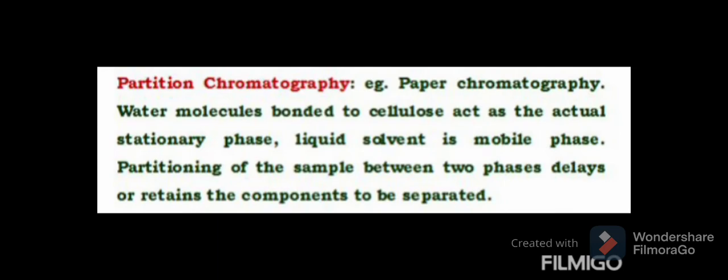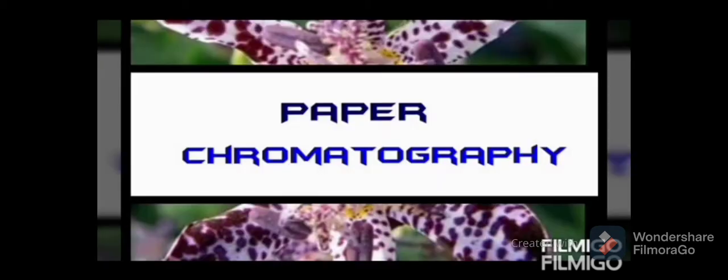Paper chromatography is an example of partition chromatography, while TLC is an example of adsorption chromatography. In paper chromatography, water molecules bonded to cellulose in the paper act as the stationary phase, and the liquid solvent is the mobile phase. Partitioning of the sample between the two phases delays or retains the components to be separated.